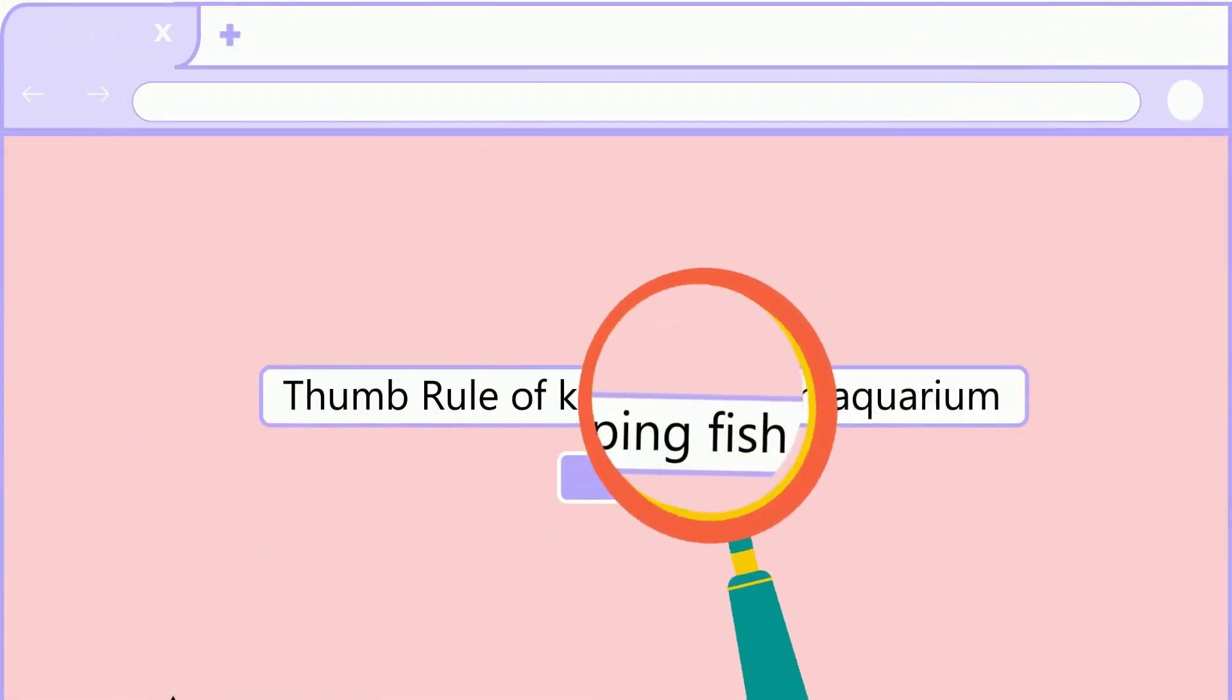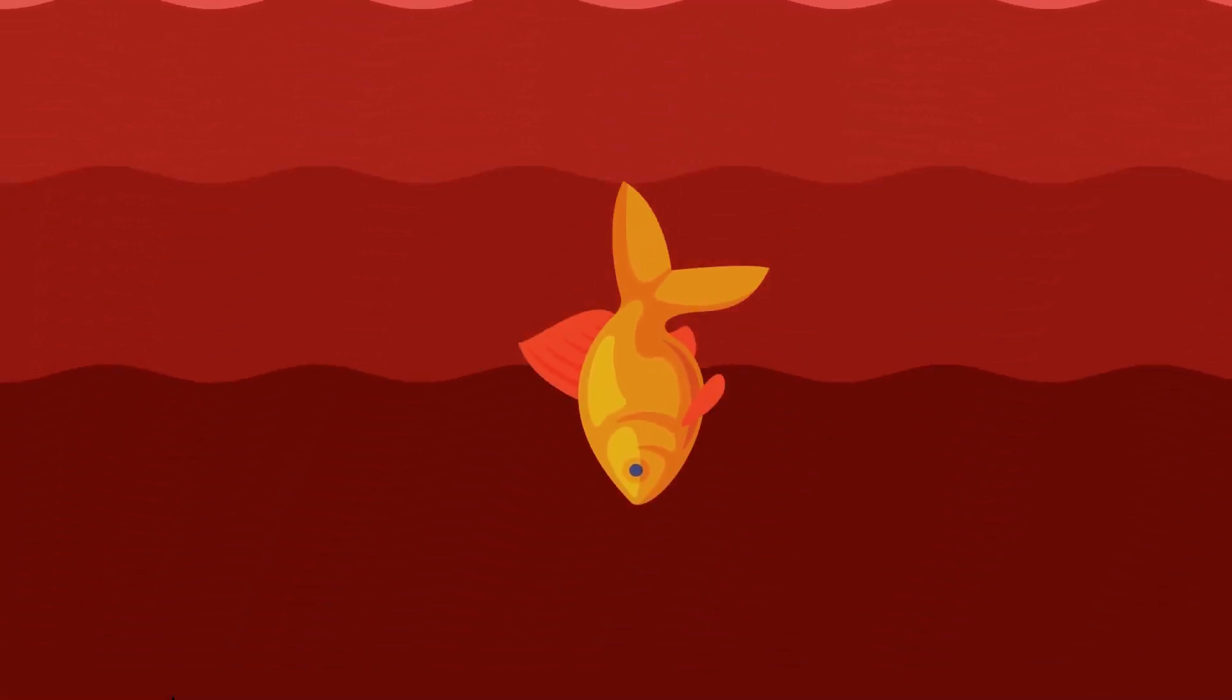If you search on the web, you may see there is a thumb rule: one gallon of water is required for every one inch of fish. Is that true? Should you follow this thumb rule? Today this episode of Aqua Leaf Expert will dig into this and analyze how many fish are suitable per gallon in aquariums. Stay tuned till the end.